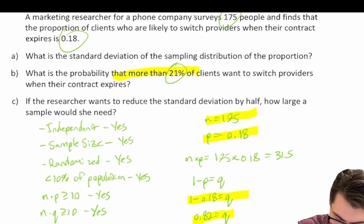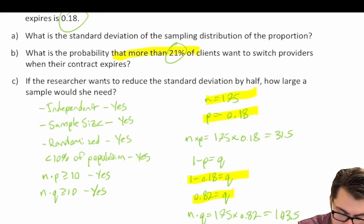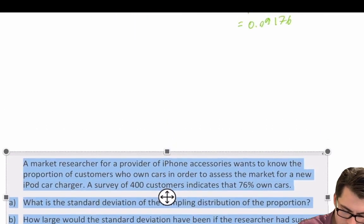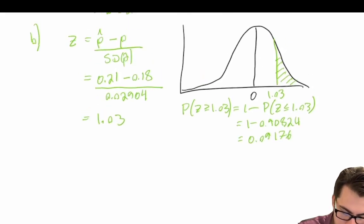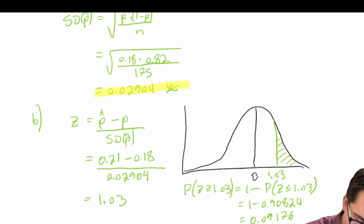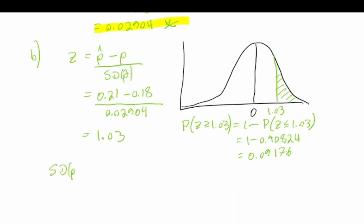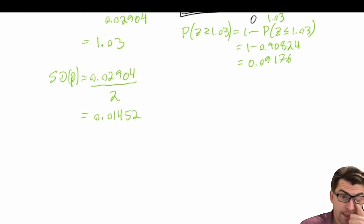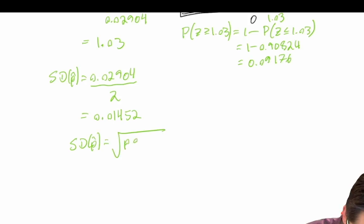For part c, if the researcher wants to reduce the standard deviation by half, how large a sample would she need? We've already calculated our standard deviation of the proportion as 0.02904. To reduce it by half, we divide by two: 0.02904 divided by two gives us a target standard deviation of 0.01452. We know the equation for the standard deviation of p-hat is the square root of p times q divided by n.